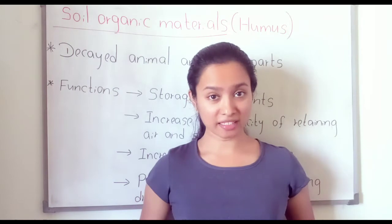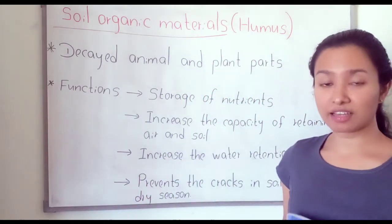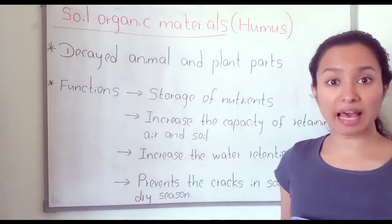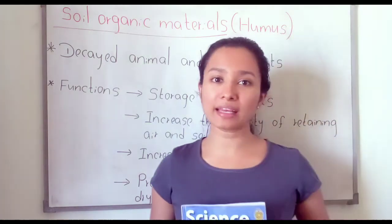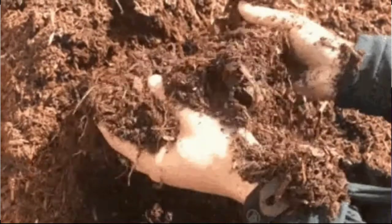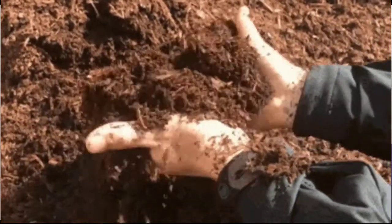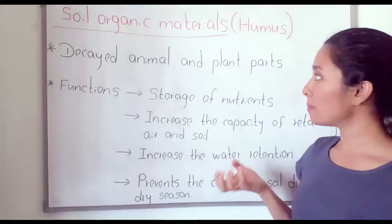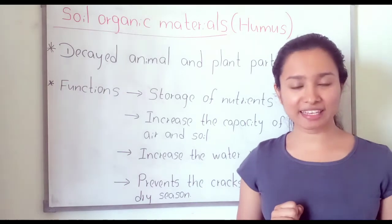Another solid material is soil organic materials — otherwise we can call these organic materials as humus. Organic materials means decayed animal and plant parts. Decayed animal and plant parts are called soil organic materials.